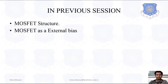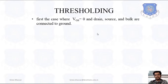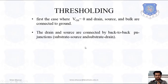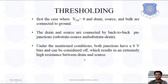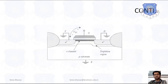So now in today's topic we discuss thresholding. In the first case, we consider VGS equal to zero and drain, source, and bulk are all connected to ground. The drain and source are connected by back-to-back PN junctions — the substrate-source and substrate-drain terminals. Under these conditions both junctions have zero voltage bias and can be considered OFF, resulting in extremely high resistance between drain and source.